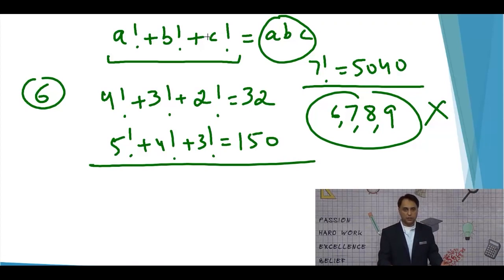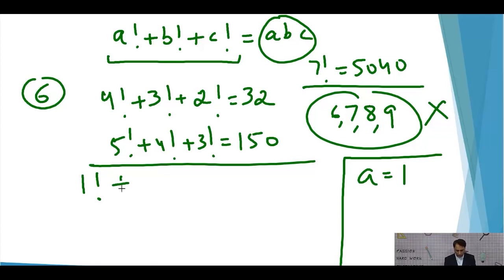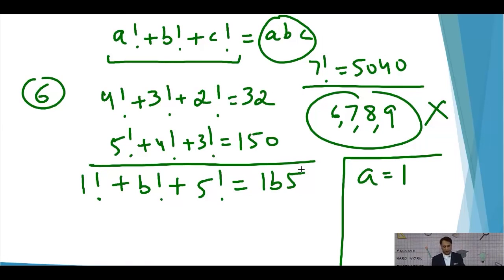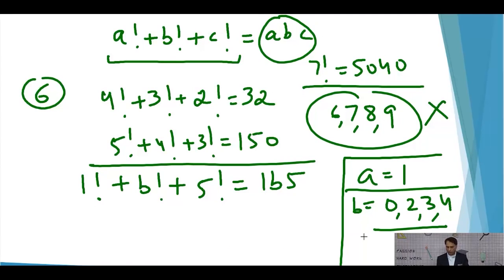Since the maximum value ABC can take is 150, and 150 itself doesn't satisfy the equation, ABC lies between 100 and 150, meaning A = 1. So far: 6, 7, 8, 9 are eliminated; A = 1; and 5 is definitely on the left-hand side. Since ABC is less than 150, B cannot be 5, so C must be 5. The equation becomes 1! + B! + 5! = 1B5. The possible values for B are 0, 2, 3, and 4, since A = 1 and C = 5 are already used, and 6 and above are eliminated.